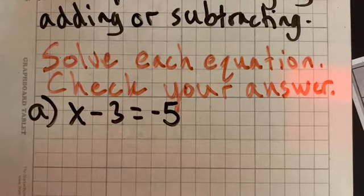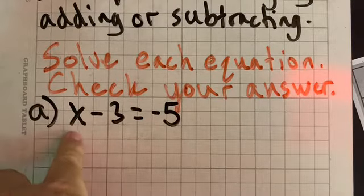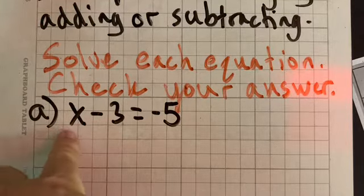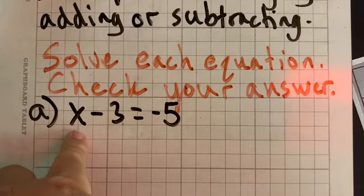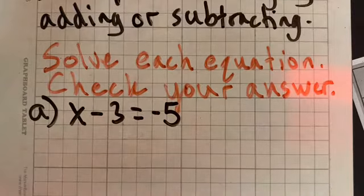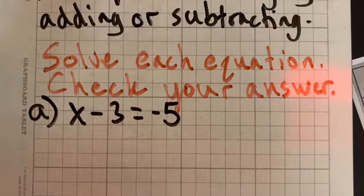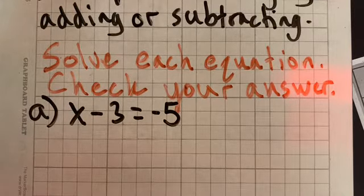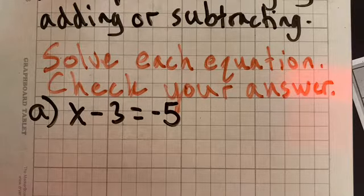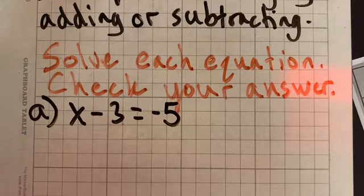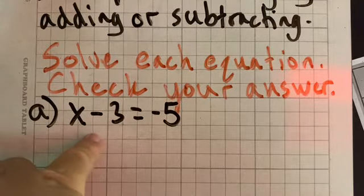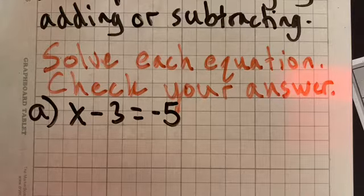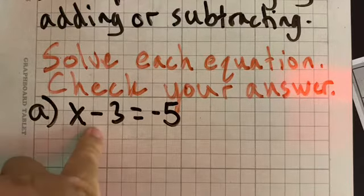So here in this problem, we have X minus 3 equals negative 5. I need to know what is X. If you notice, this problem is a subtraction problem. My goal is to get X by itself. In other words, I got to get rid of this negative 3. One way to get rid of that negative 3, the only way to get rid of that negative 3 is to make it become 0. Because you'll be left with X plus 0, and X plus 0 would just be X. So my goal is to get rid of negative 3. But the question is, how am I going to do that?